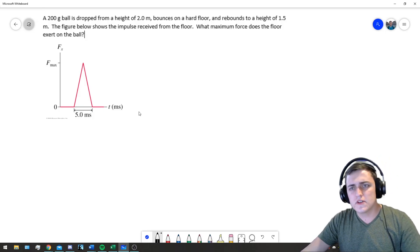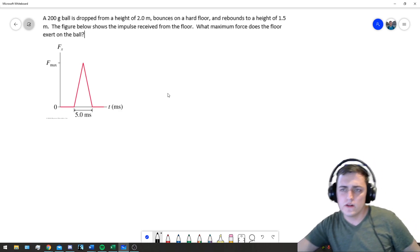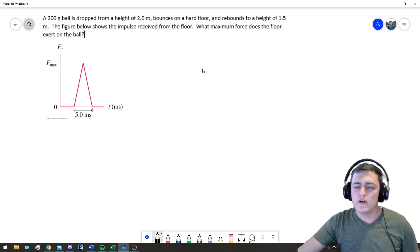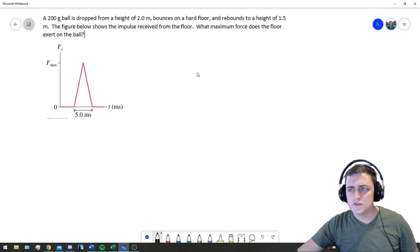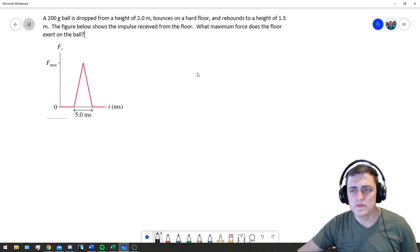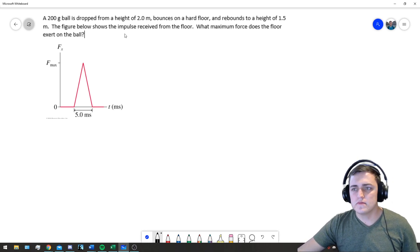In work seven problem four, we are looking at a ball being dropped from two meters, rebounds to one and a half meters. We're losing some energy and then we see we have a certain impulse received from the floor.